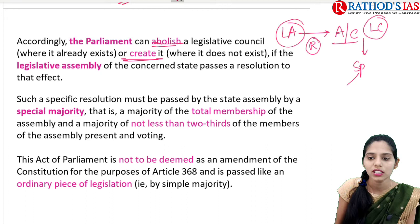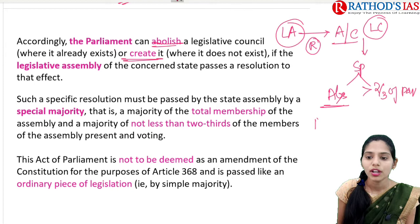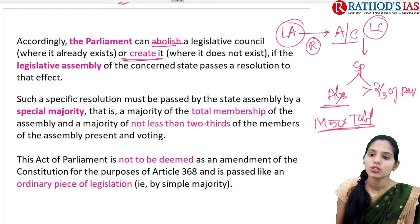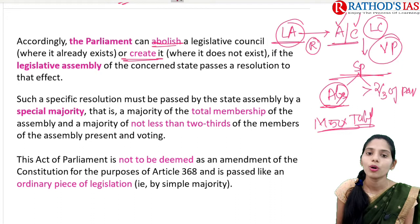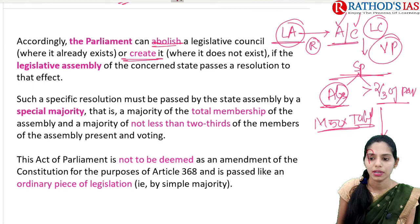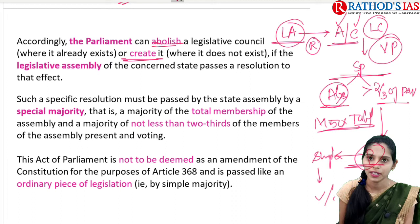The resolution also requires more than two-thirds of members present and voting. Once the State Legislative Assembly passes this resolution for the creation or abolition of the Vidhan Parishad by special majority, it then moves to Parliament. Parliament will look into the issue, and if Parliament passes it with a simple majority, the creation or abolition can be done. However, the final decision is taken by Parliament.